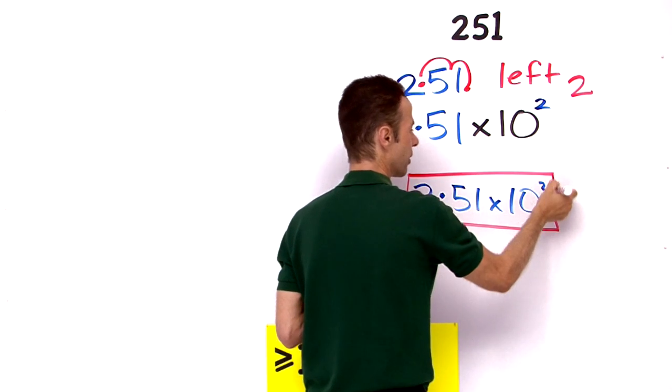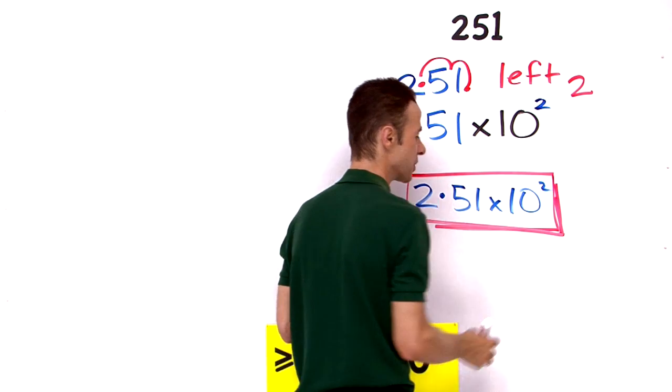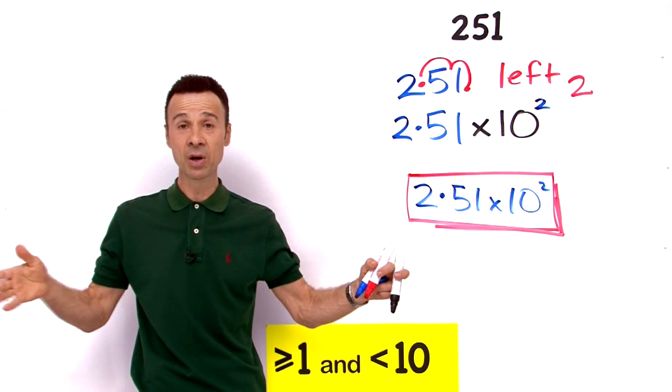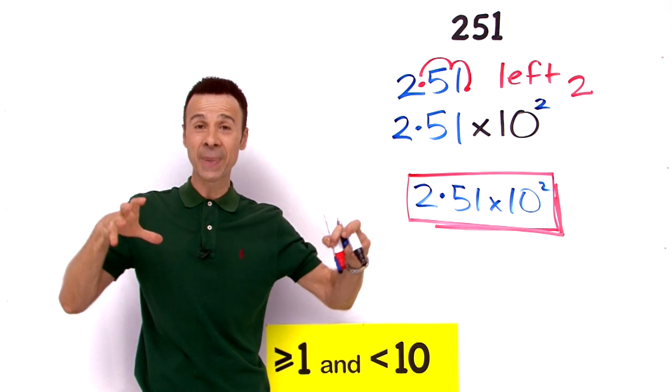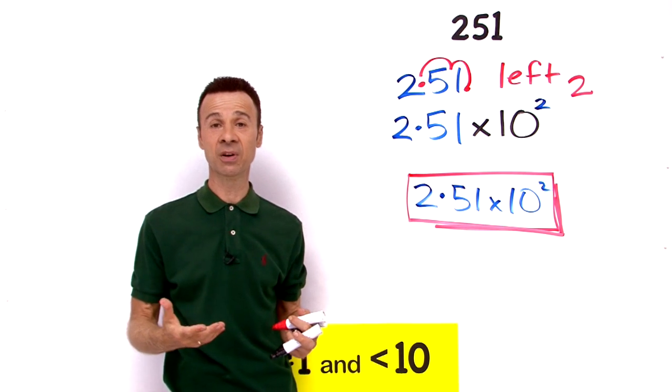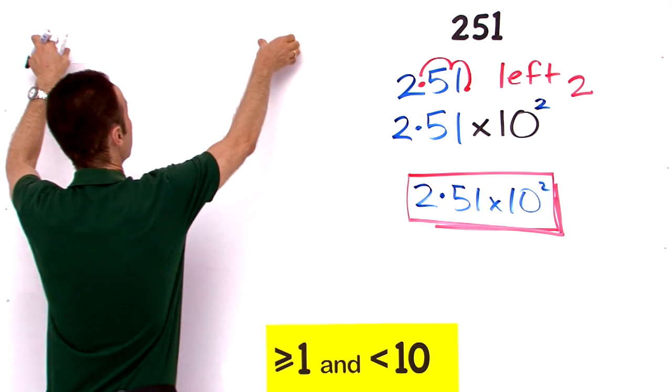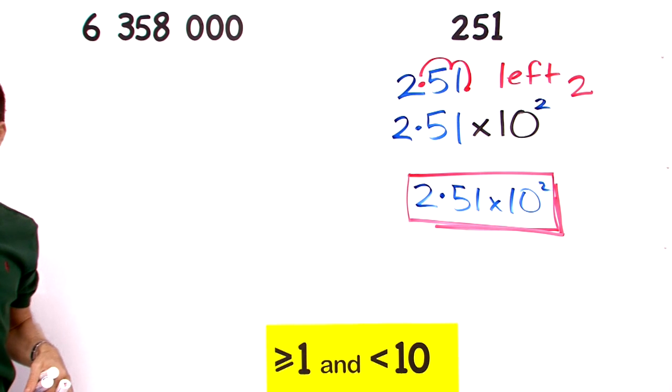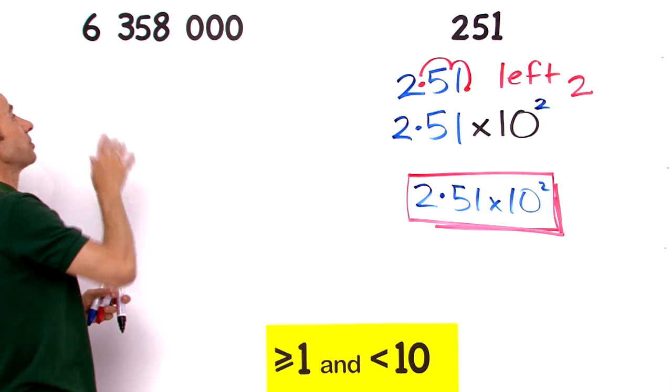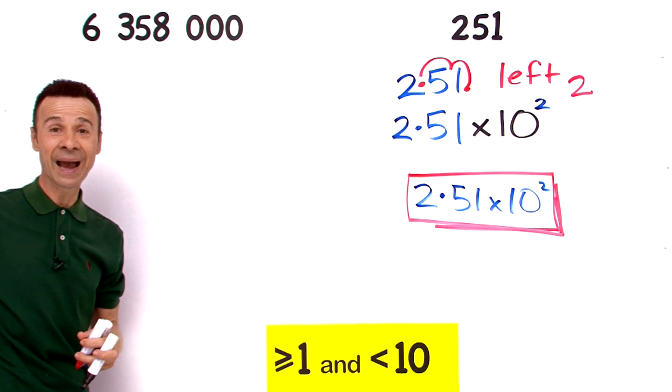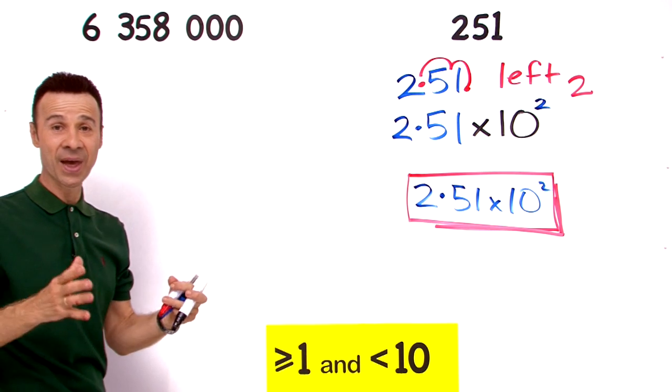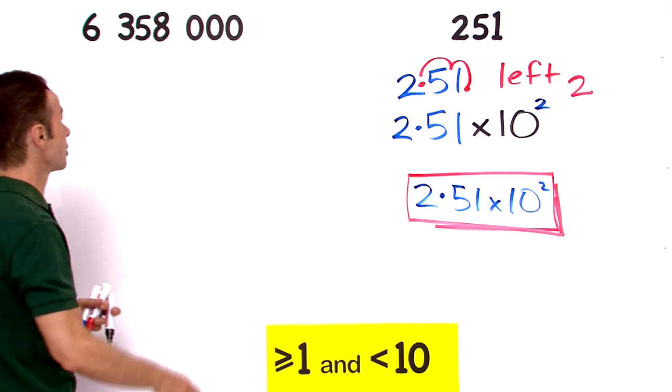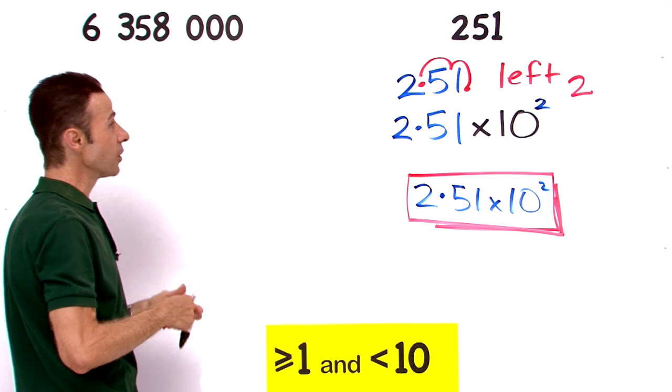Now you may be thinking, well that's only a three-digit number. What happens when you have, as you said earlier, a very large number, lots of zeros, and you want to make it more compact in scientific notation? Well, let's do an example like that. This example, as I unveil it, is in the millions, so it's relatively large: 6,358,000.